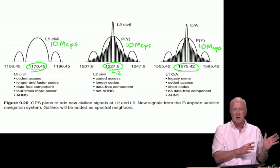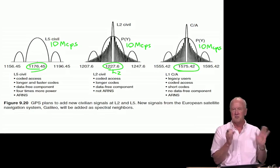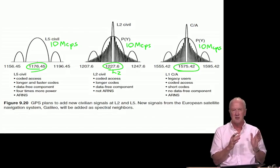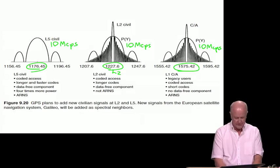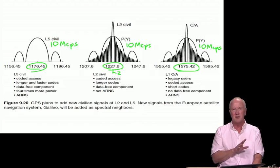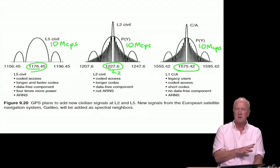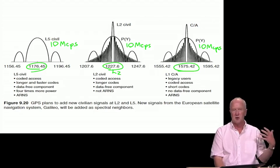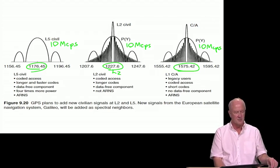Remember, we talked about how the de-spreading operation of the GPS receiver attenuates the influence of that radio frequency interference. So the civilians are eager for that too. It also has more signal power. And we won't go into these details, but it also has a so-called data-free component. And that means that the navigation data doesn't modulate all of the signal coming at L5. And that helps the receiver attain better performance if there's strong noise present or radio frequency interference present.